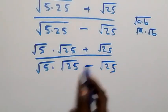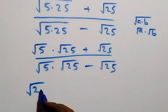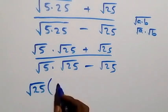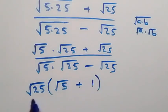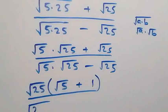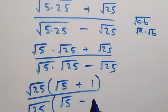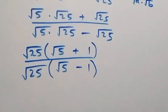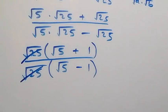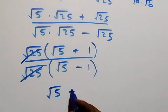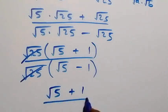Root 25 is common in the numerator, so we factor root 25 out to get root 25 times bracket (root 5 plus 1). Similarly, the denominator becomes root 25 times bracket (root 5 minus 1). The root 25 terms cancel each other, leaving us with (root 5 plus 1) over (root 5 minus 1).